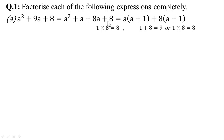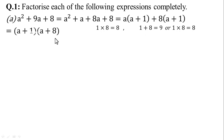We can write: a² + a + 8a + 8. Taking common from first two terms — a² and a — common is a, giving a(a + 1). In the second two terms, 8a + 8, common is 8, giving 8(a + 1). Since (a + 1) is common in both terms, the final answer is (a + 1)(a + 8).